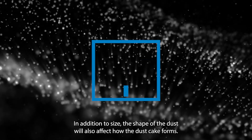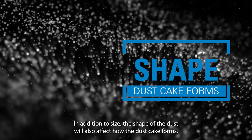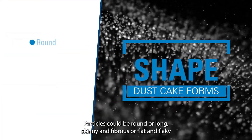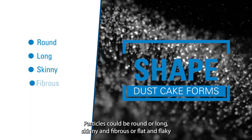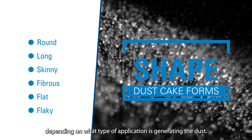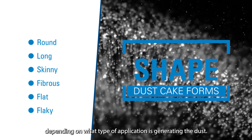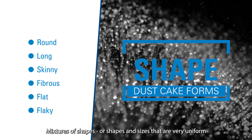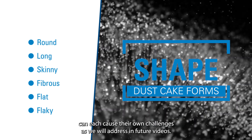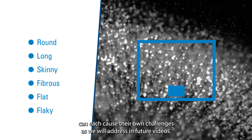In addition to size, the shape of the dust will also affect how the dust cake forms. Particles could be round, or long, skinny and fibrous, or flat and flaky, depending on what type of application is generating the dust. Mixtures of shapes, or shapes and sizes that are very uniform, can each cause their own challenges, as we will address in future videos.